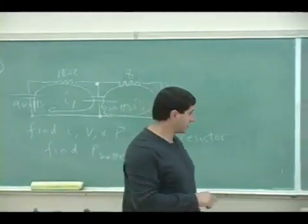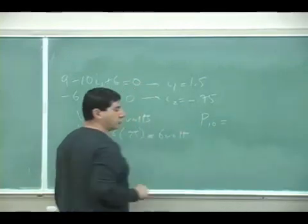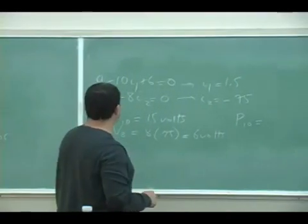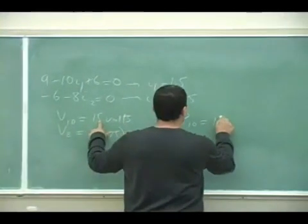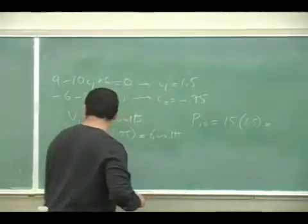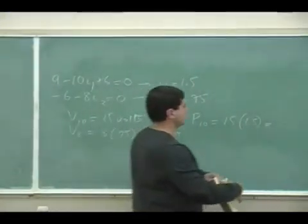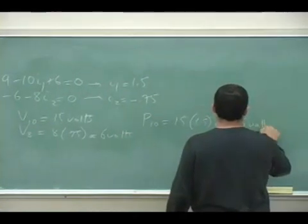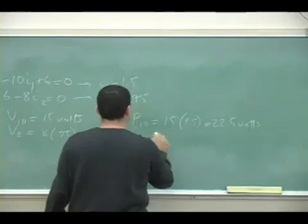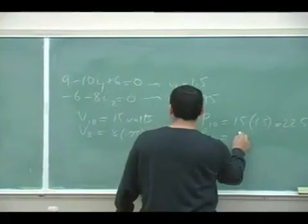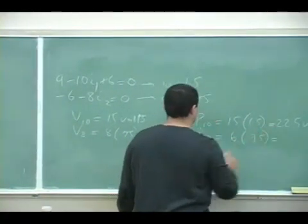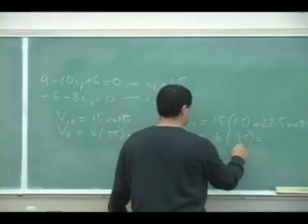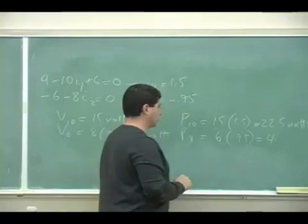And then if I want to know the power across each resistor, power across the 10-ohm resistor, you could either do I squared R or VI or V squared over R. It doesn't matter. I think the easiest one will just be VI here, 15 times 1.5. Power across the power dissipated in the 8-ohm resistor is going to be 6 times 0.75, which is going to be 3 fourths. So 4.5.